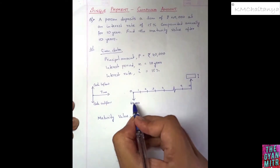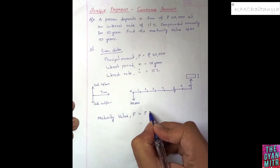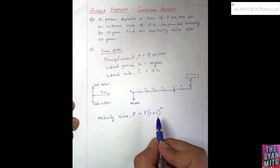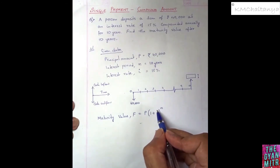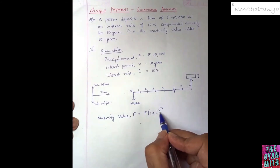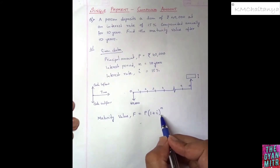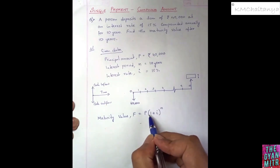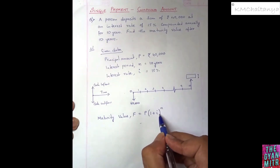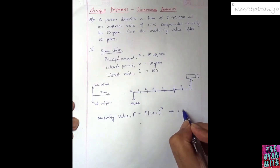The equation to calculate the maturity value F equals the principal amount P multiplied by 1 plus i to the power of n. Keep in mind that the value of i, the interest rate, is in decimals, not in percentage, in this equation. This is the same as the compound interest formula where i was expressed as a percentage, but here i is in decimal form.